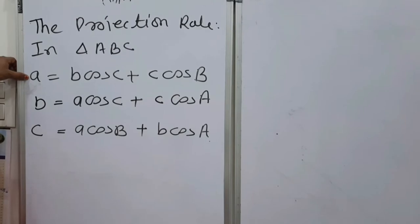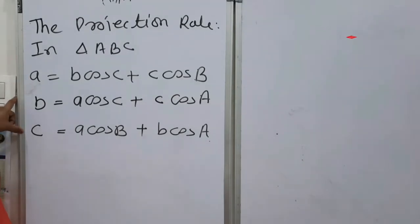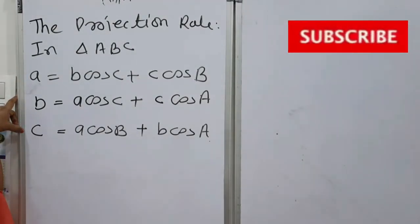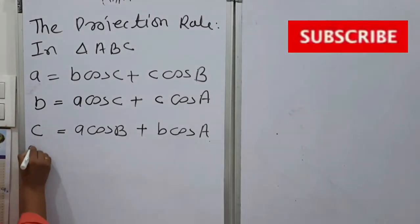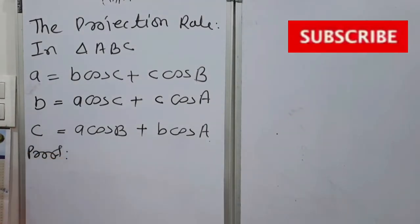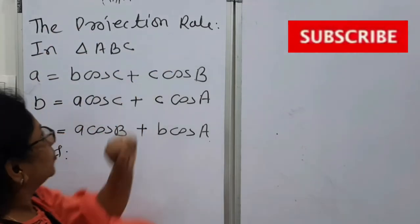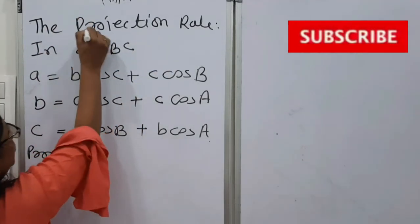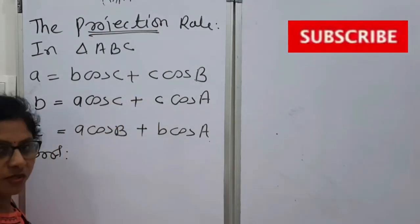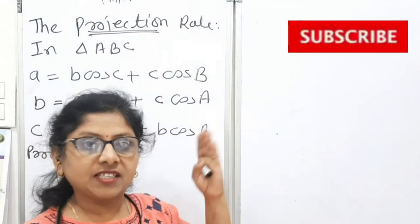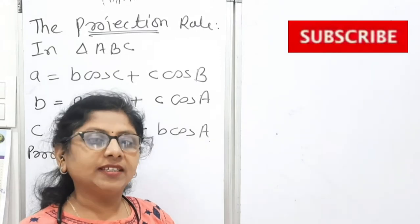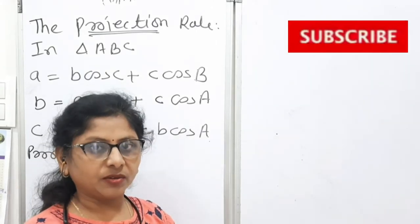Now what is this a, this b, this c, we have seen in previous videos. Now we will see the proof of this rule. Before that, we will try to understand what is the projection. The projection of any object. Now projection is nothing but the shadow cast by that particular object.